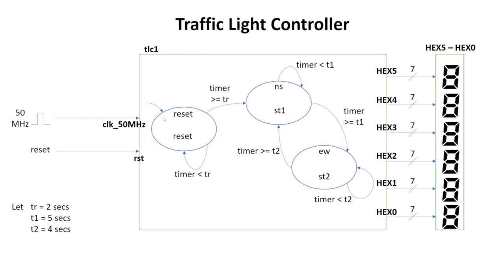It's important to have this reset state so that it also serves as your startup state. So if there's a power outage and power suddenly comes back on, we have a reset state. That's something you want to think about: if you have a traffic light controller and power comes on, what state should it be in? Should it be all reds, all greens, or one road red and another green?